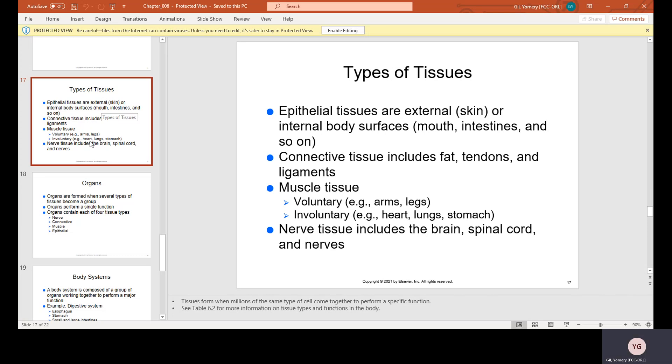What are the four types of tissue in the human body? They're epithelial, muscle, connective, and nerve.